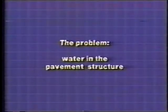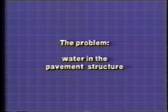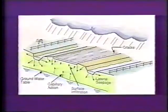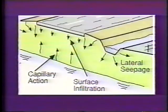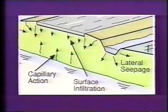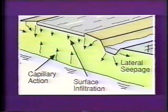The problem is essentially one of water in the pavement structure. This Federal Highway Administration sketch shows that water in pavements can come from numerous sources, such as surface infiltration from rain or melting snow, lateral seepage, and capillary actions in soils carrying water up toward the pavement structure from below.